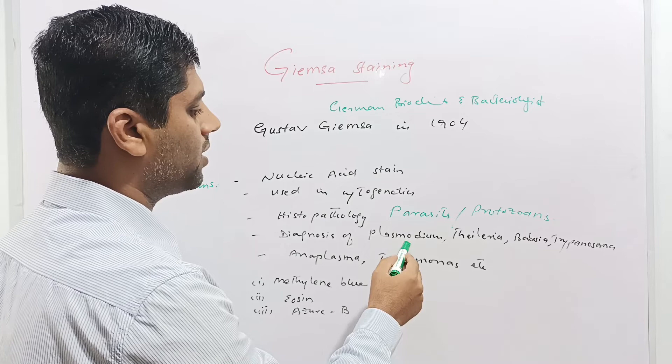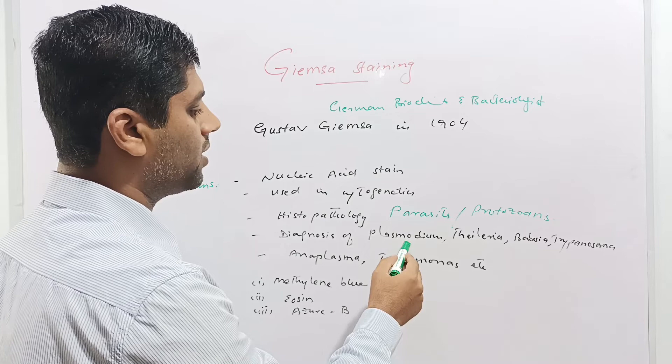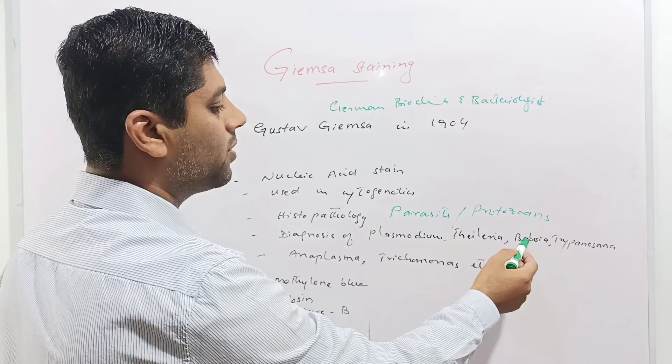For example, plasmodium which causes malaria in human beings, thilaria which causes thilariosis, babesia which causes babesiosis or redwater disease, and trypanosoma which causes sleeping sickness disease.